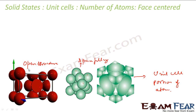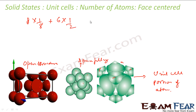In the face-centered case, the corner atoms are shared by eight unit cells — there are eight such atoms, each contributing one-eighth, giving one. Then there are six atoms on the faces, and each face atom is shared by two unit cells, so each contributes one-half. Six times one-half equals three. Adding one plus three equals four. So there are four atoms per unit cell in the face-centered structure.